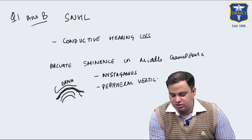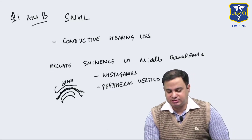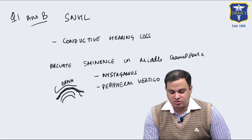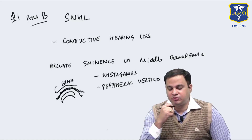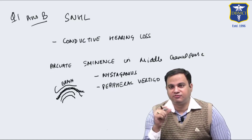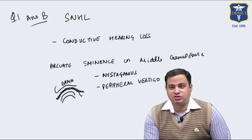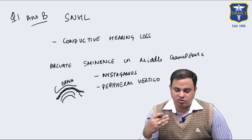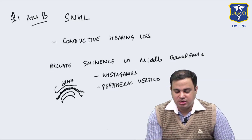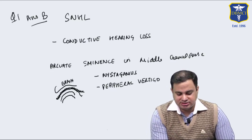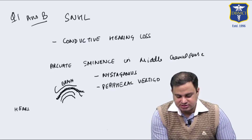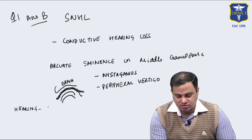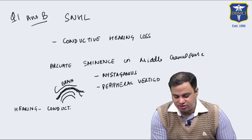The superior semicircular canal is responsible for sensing acceleration and deceleration changes in the body. If there is dehiscence, activities like nose blowing, pressing in the ear canal, coughing, or exposure to loud noise all lead to nystagmus and peripheral vertigo. Regarding hearing, there is no cochlear loss, so SNHL is not present; the patient will have a conductive hearing loss.